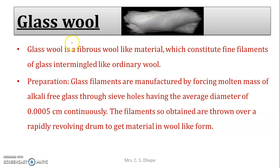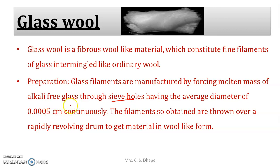Glass filaments are manufactured by means of alkali-free glass. You take alkali-free glass and create a molten mass. That molten mass of glass is then passed through sieve holes having an average diameter of 0.005 cm — extremely fine filaments are produced this way.